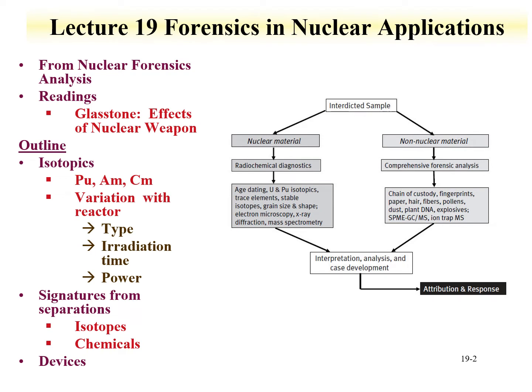We'll also see the development of signatures from separations, including isotopics — particularly fission products. The retention and relative amount of fission products can be an indication of the separation method used. We learned about the Purex process from previous lectures. Information on other separation routes can be inferred by the level of fission products. We'll also talk about the chemicals present in separations; stable, non-active chemicals can provide an understanding of the chemical separation route used for producing the nuclear material.